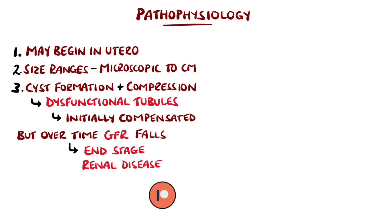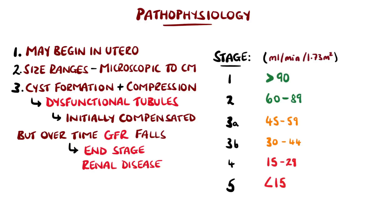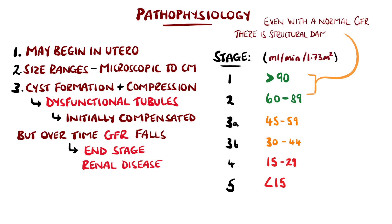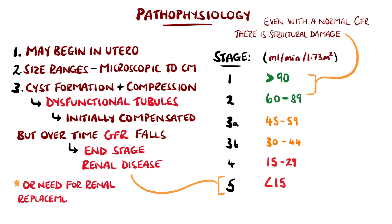By definition, the presence of structural injury makes polycystic kidney disease a form of chronic kidney disease, with end-stage renal disease being defined as needing renal replacement therapy, like dialysis or a transplant, or a GFR below 15 millilitres per minute.